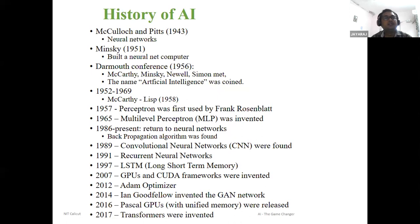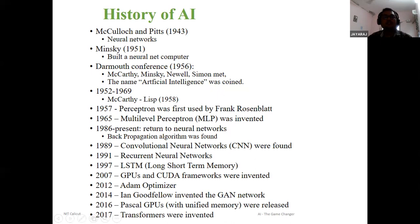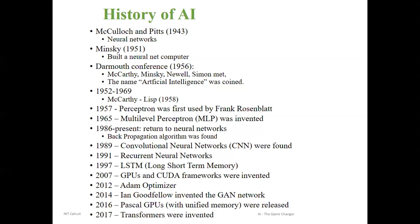In 1943, McCulloch and Pitts formed the first neural network. Then Minsky in 1951 built a neural net computer. And in 1956, the subfield AI was coined at the Dartmouth conference — four eminent scientists: McCarthy, Minsky, Newell, and Simon met together and proposed artificial intelligence; hence the subfield was coined. In 1958, McCarthy found the Lisp processing language, which was used in the initial days of AI. In 1957, the Perceptron was formed by Frank Rosenblatt, and in 1965, the multilayer Perceptron was invented.